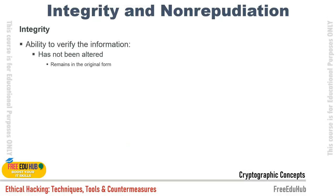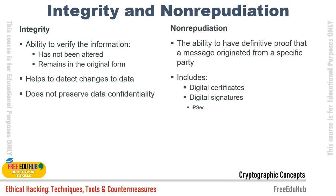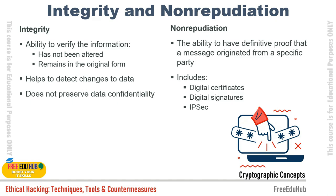Integrity is the ability to verify that information has not been altered and remains in its original form as created. For example, if an organization transfers $10,000 to another company, it should not become $100,000 at the destination. Similarly, student registration records saved five years ago should remain unchanged after ten years — verifying this unchanged state is called integrity.